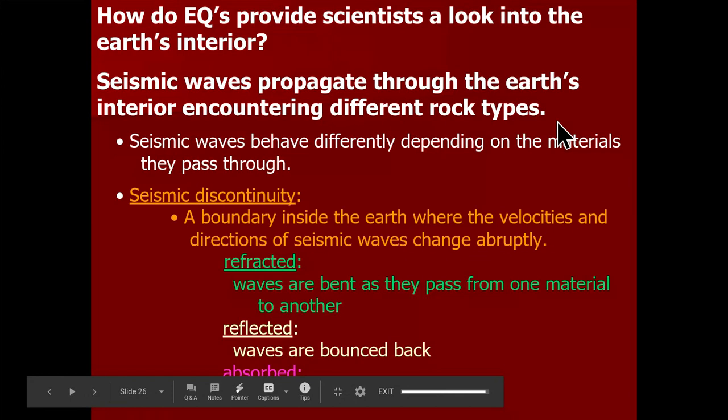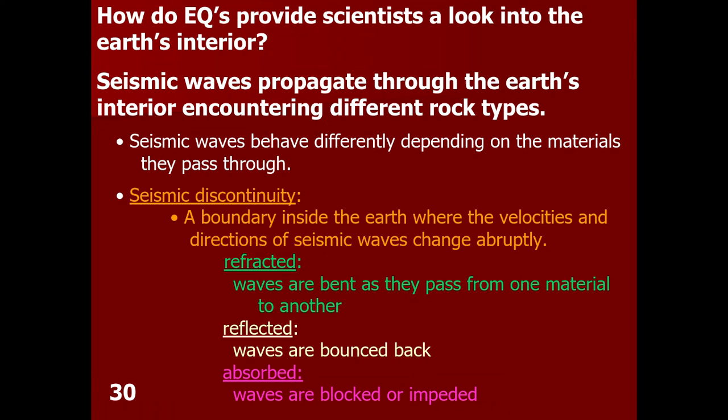Welcome to the Earth Science lecture: Earthquakes, Part Three. In the previous two parts, we talked about what an earthquake represents, how an earthquake takes place, and the different kinds of seismic waves released from an earthquake. In Part Two, we looked at how to measure earthquakes using the Mercalli scale of intensity, the Richter scale, and the moment magnitude scale. For Part Three, we're going to shift gears and look at how seismic waves provide scientists a view into the Earth's interior.